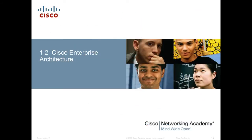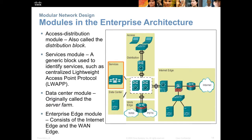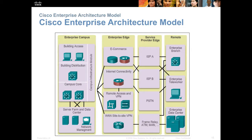Let's look at the Cisco Enterprise Architecture. It strives to create functionality-based modules. Here are some modules: a campus module, a data center module, a branch site module, and a teleworker module. There are over 30 of these modules and we'll look at a few of them. It still uses the hierarchical design. Here's a look at a whole bunch of modules all strung together to give you an idea of how a campus enterprise connects to its data center and through an ISP out to remote locations.